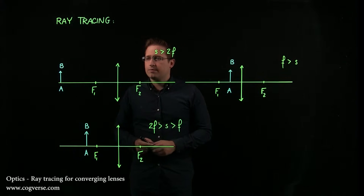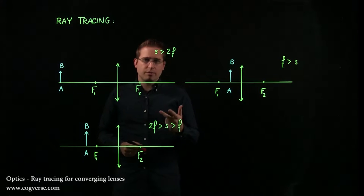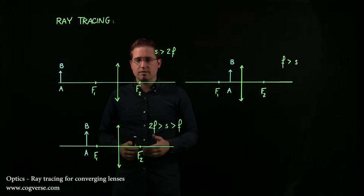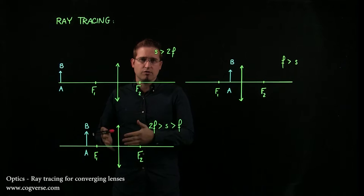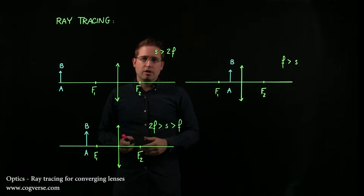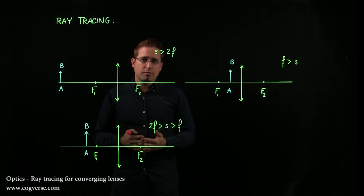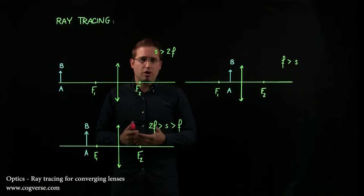Take this one to begin. There are three rules for ray tracing, and it has nothing to do with the fact that there are also three cases. It's simply for a given lens, converging or diverging, there are three rules. Usually if you apply only two of them, you can find where the image forms, but we're going to go over all three of them.